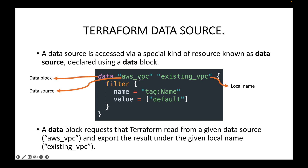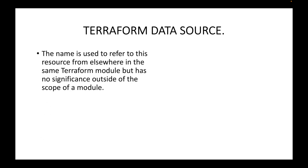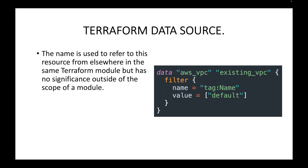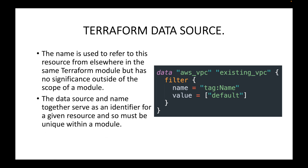A data block requests that Terraform read from a given data source — aws_vpc in this case — and export the result under a local name, which is existing_vpc here. Terraform will go to the AWS console, search for a VPC with the specified tags, get the VPC ID and related information, and store it under this local name. The data source type and name together serve as an identifier for a given resource and must be unique within a module.